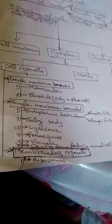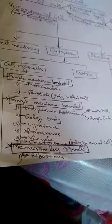Then, you listed here. The cell structure, cell consists of three parts, cell membrane, cytoplasm and nucleus.